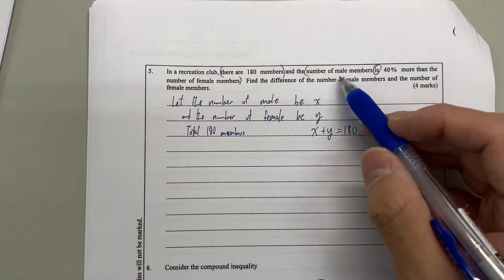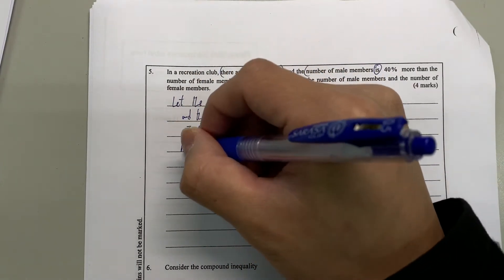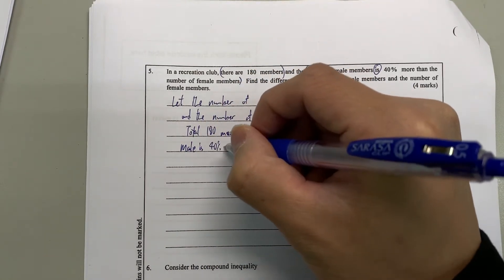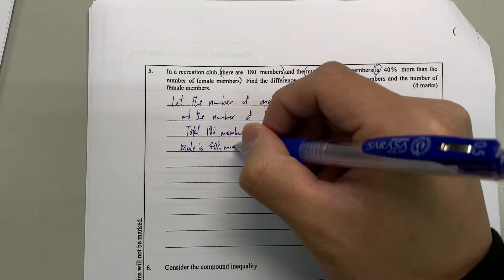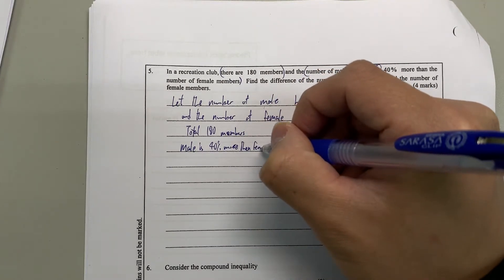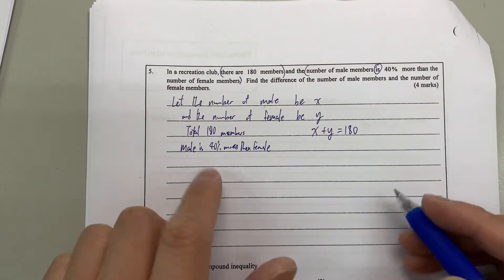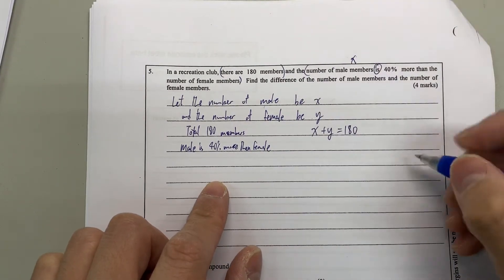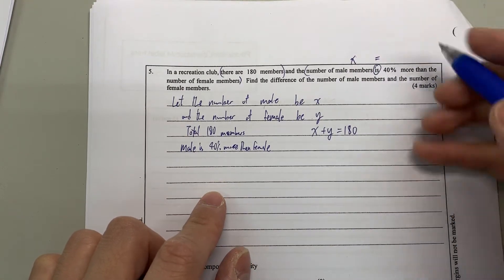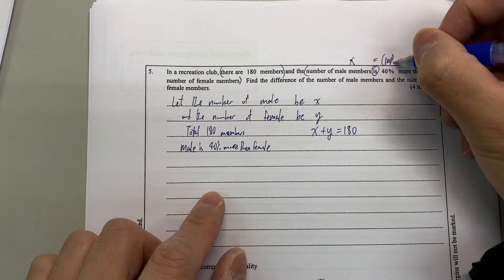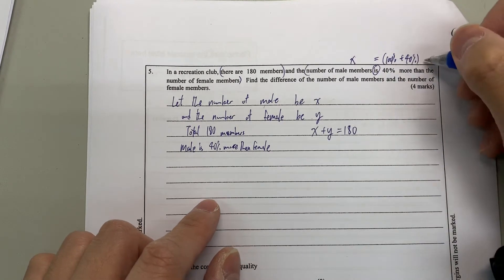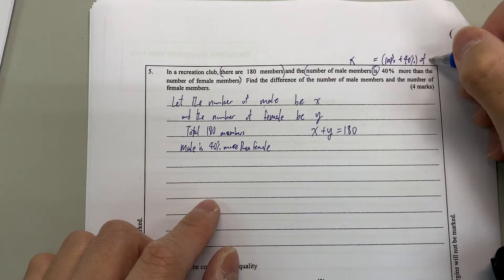From the second sentence, they say that male is 40% more than female. So we just translate one by one. Male labeled as x. Is always means equal. 40% more than means on top of 100% we have extra 40% more of female. Female then means y.